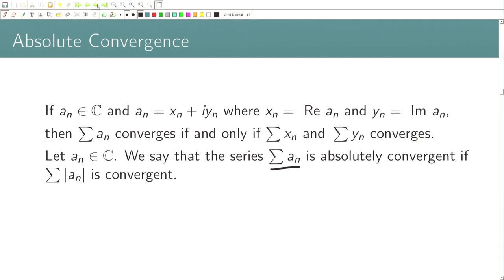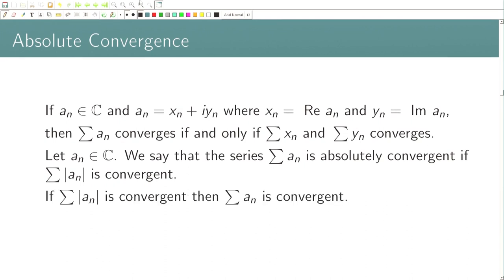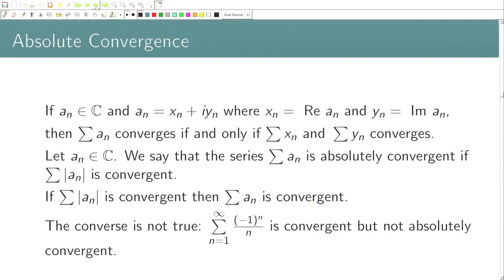One can see that if Σ|a_n| converges, then Σa_n is also convergent. However, the converse may not be true. We are all familiar with the alternating series example: Σ (−1)^n / n, from n=1 to infinity, is convergent but not absolutely convergent. Because if we take the modulus, |(-1)^n| = 1, and we know that Σ(1/n) is not a convergent series.